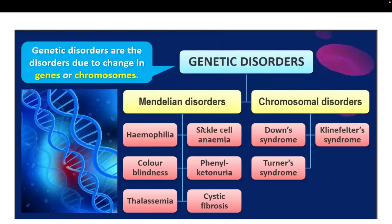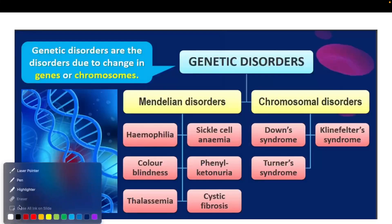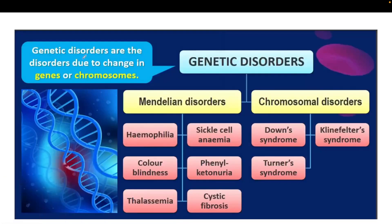What is a genetic disorder? Genetic disorders are those disorders which occur due to changes in either the genes or the chromosomes. When some changes occur at the gene level or chromosomal level, certain symptoms will occur, and that is called a genetic disorder.